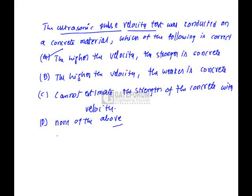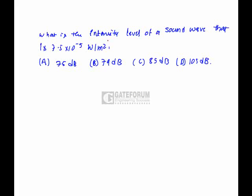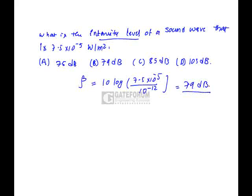The question is what is the intensity level of a sound wave that is 7.5 times 10 to the power of minus 5 watts per square meter. We have to find out the intensity of sound wave beta equals 10 log 7.5 into 10 to the power of minus 5 into 10 to the power of minus 12, which equals 79 decibels. Option B is correct.